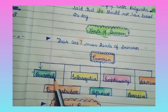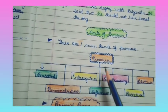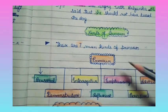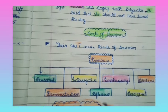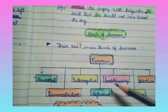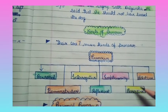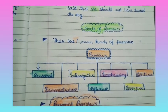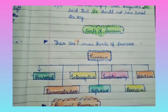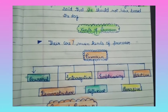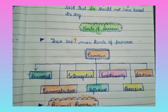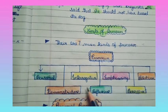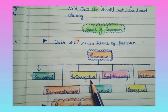The seven main kinds of pronouns are: personal pronoun, interrogative pronoun, emphasizing pronoun, relative pronoun, demonstrative pronoun, reflexive pronoun, and possessive pronoun. In this video we will be studying personal pronoun, demonstrative pronoun, and interrogative pronoun.